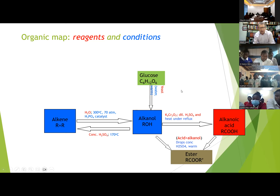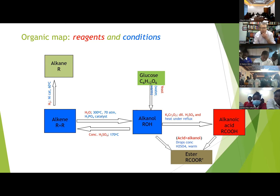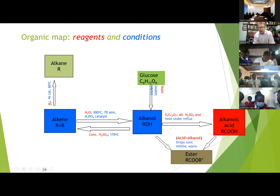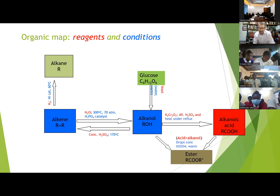We can also turn an alkene into an alkane — this is an industrial process. We add hydrogen, removing the double bond, using a nickel catalyst at around 40–80°C (60°C is a safe answer). This uses H2 and a nickel catalyst with heat. A key example is turning vegetable oils like maize or palm oil into margarine.